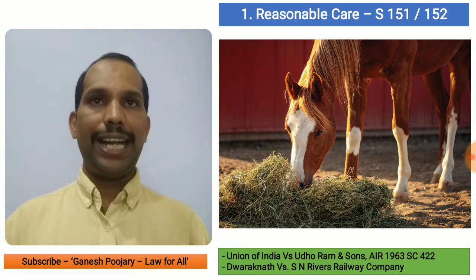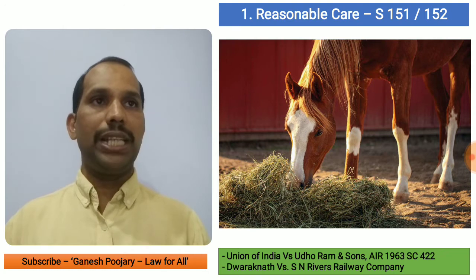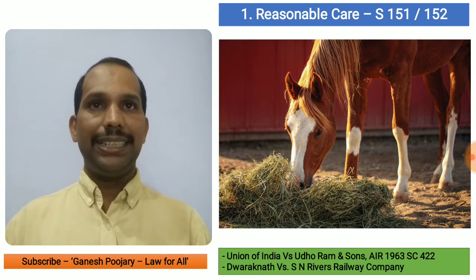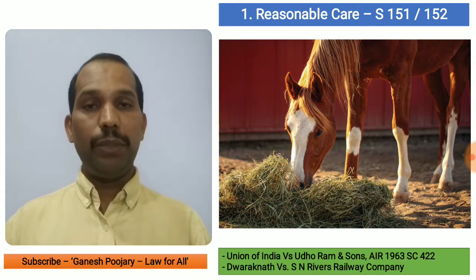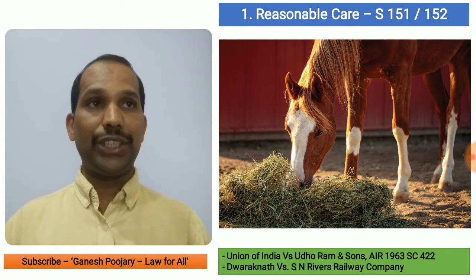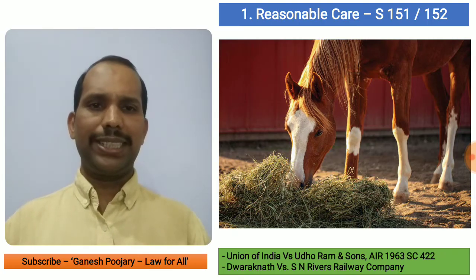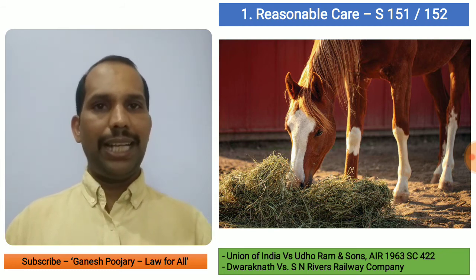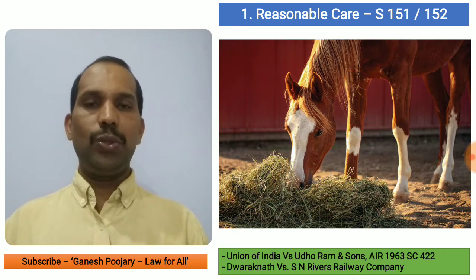In Union of India versus Udhoram and Sons, the Supreme Court held that the railway company did not take due care. Firstly, they did not prove that the railway protection police escorting the train was sufficient in strength. Secondly, unlike a prudent man, the police did not keep an eye on the wagons, and when the train stopped they failed to prevent theft — the defendants were held liable. Similarly, in Dwaraknath versus SN Reverse Railway Company, a shipment was damaged due to fire caused by negligence and the defendants were again held liable.